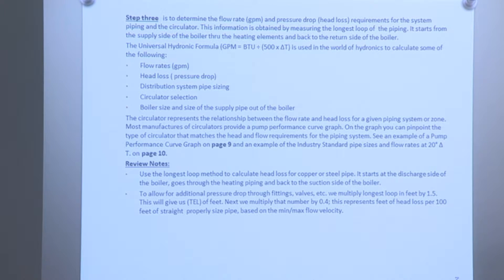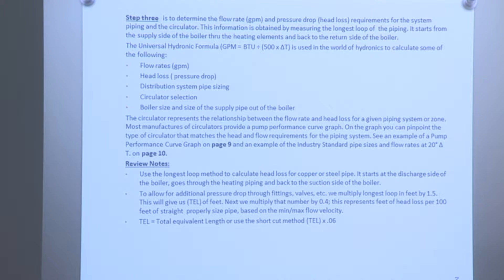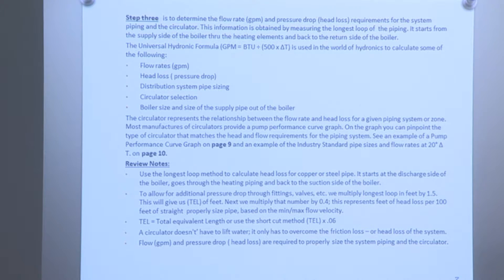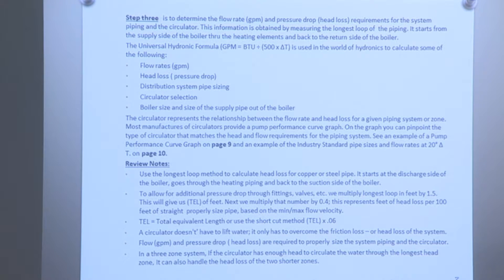Multiplying by 1.5 gives us the total equivalent feet. Next, we multiply that number by 0.4, which represents feet of head loss per 100 feet of straight pipe, properly sized based on min-max flow velocity. Using the short-cut method, you can take the total equivalent length times 0.06. A circulator doesn't have to lift water — it only has to overcome the friction loss or head loss of the system. In a three-zone system, if the circulator has enough head to circulate water through the longest zone, it can also handle the head loss of the two shorter zones.